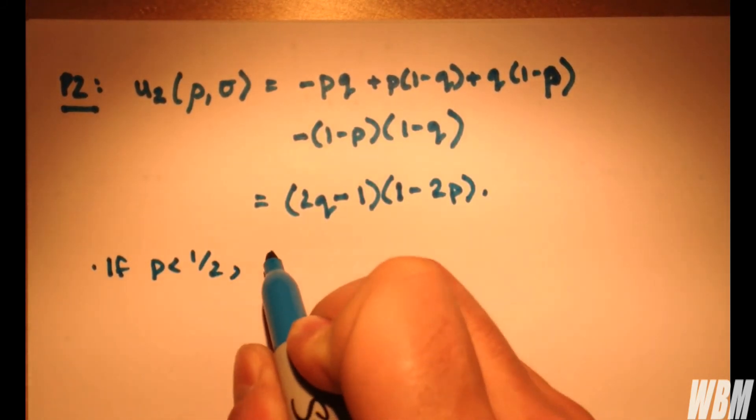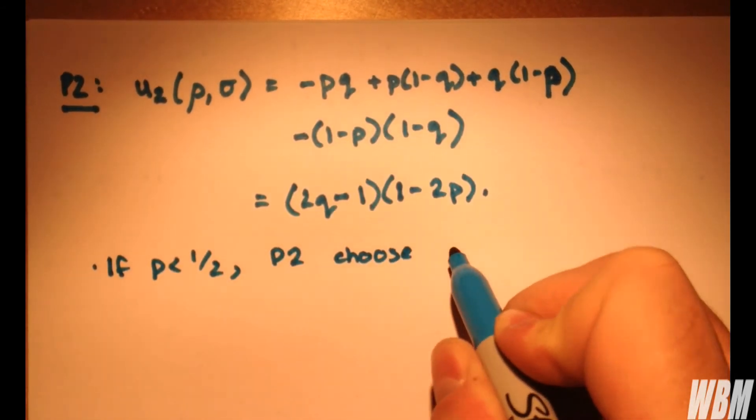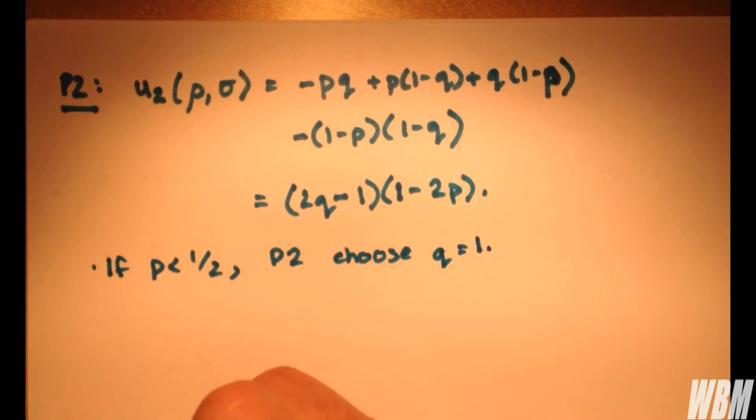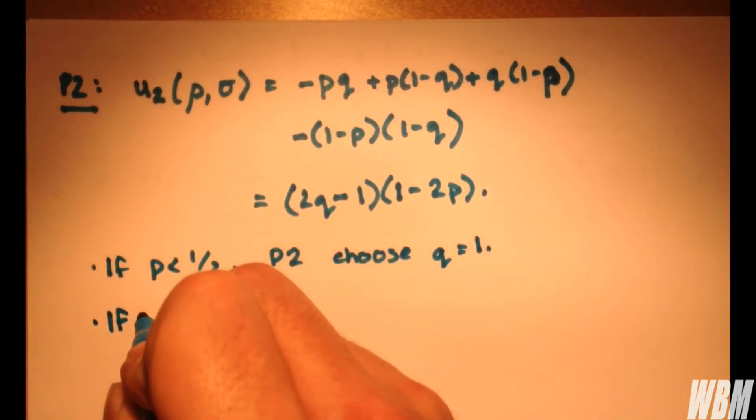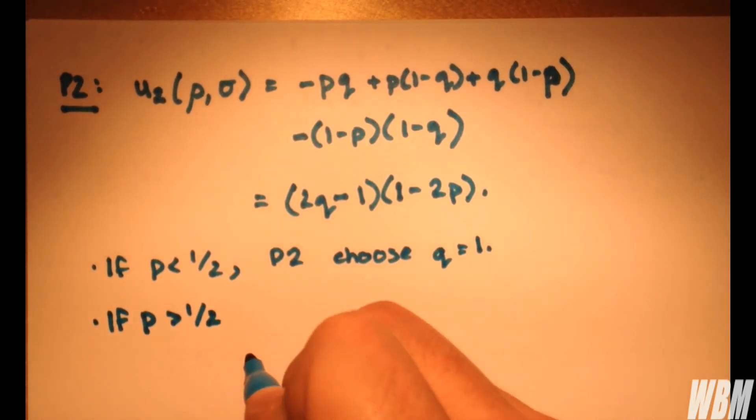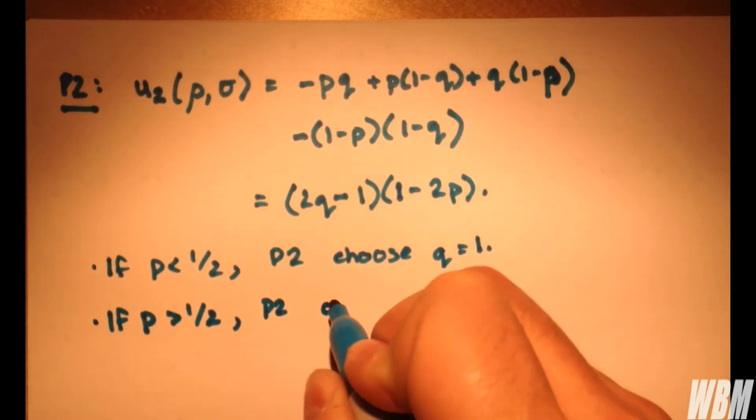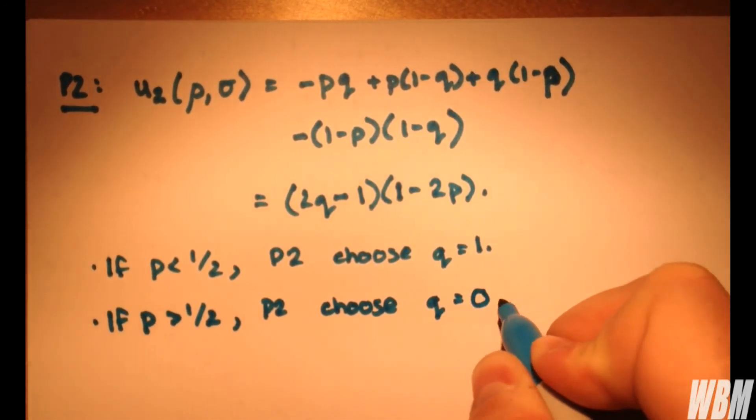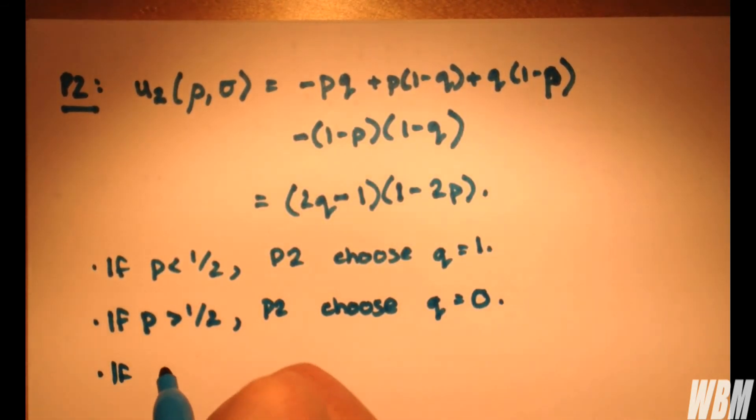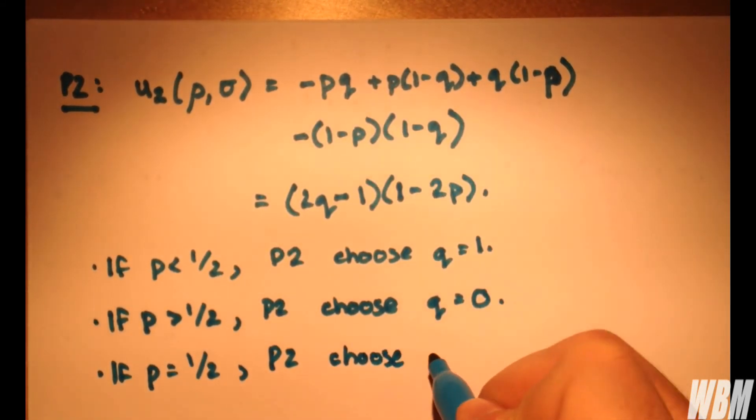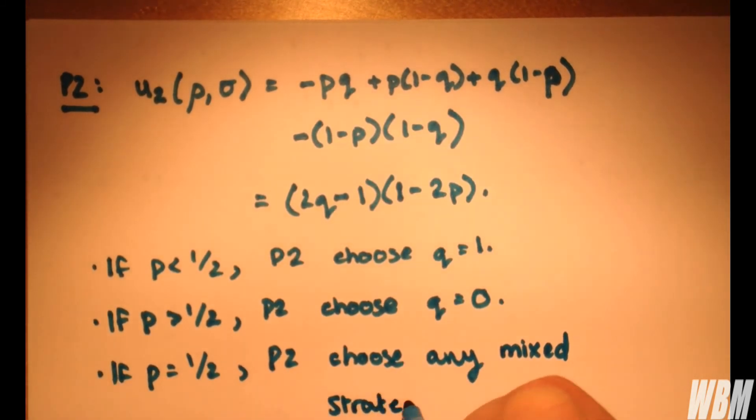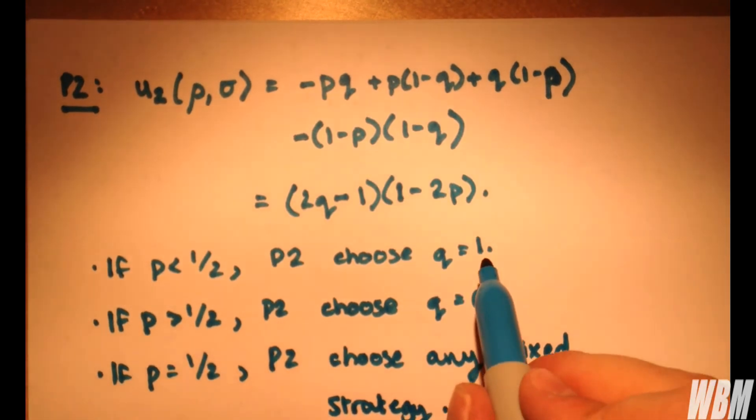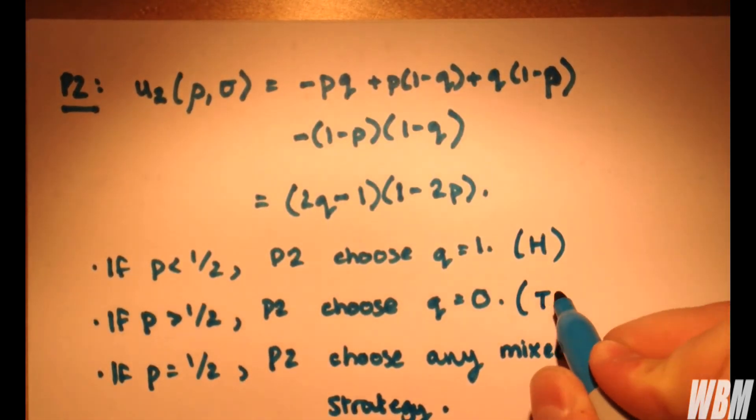Now in this case, if p is less than a half, player two will choose q equals one. If p is greater than a half, player two will choose q equals zero. And if p equals a half, player two can choose any mixed strategy. Of course for this we have he'll play heads, and for here he'll play tails.